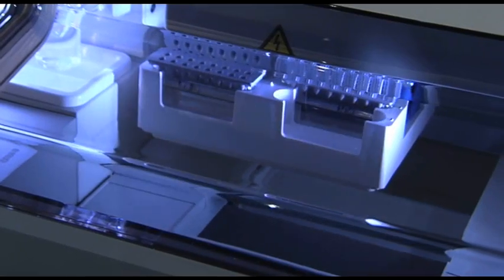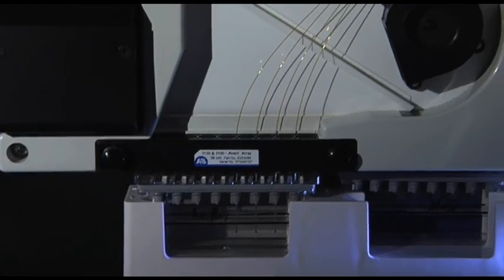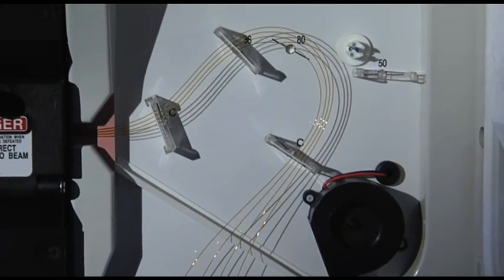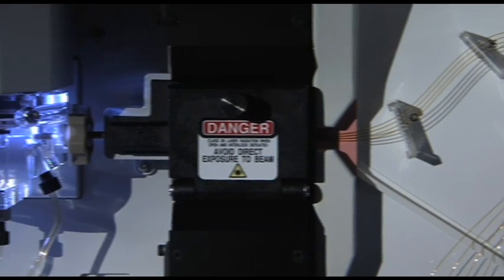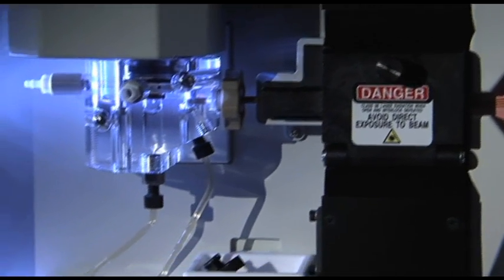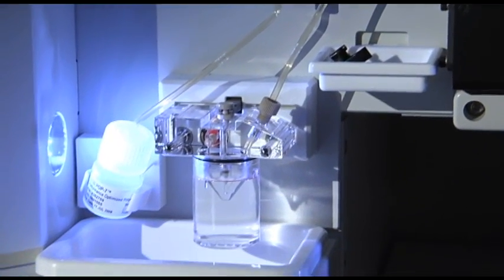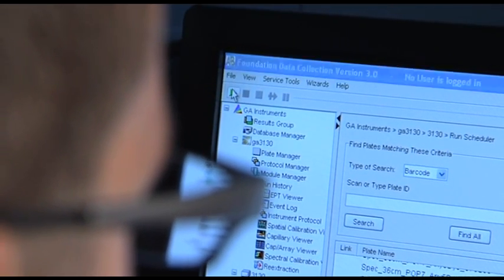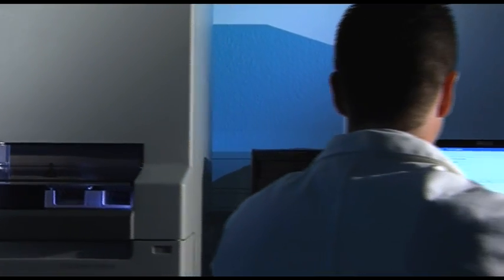The sequencing system that is best suited for your needs and applications depends mainly on your sample throughput. The 3130 Genetic Analyzer is a four-capillary system, which means it simultaneously sequences up to four samples at a time. Depending on your sample throughput, Applied Biosystems offers a family of genetic analyzers with up to 96 capillaries.